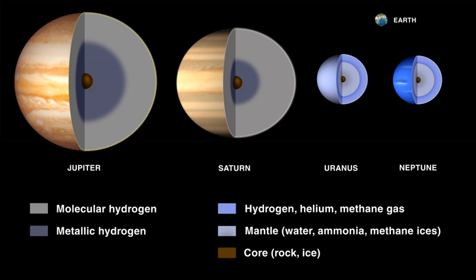Terrestrial planets are believed to have come from the same nebular material as the giant planets, but they have lost most of the lighter elements and have different histories. Planets closer to the Sun might be expected to have a higher fraction of refractory elements, but if their later stages of formation involved collisions of large objects with orbits that sampled different parts of the solar system, there could be little systematic dependence on position. Direct information on Mars, Venus, and Mercury largely comes from spacecraft missions. Using gamma-ray spectrometers, the composition of the crust of Mars has been measured by the Mars Odyssey orbiter, the crust of Venus by some of the Venera missions, and the crust of Mercury by the Messenger spacecraft.